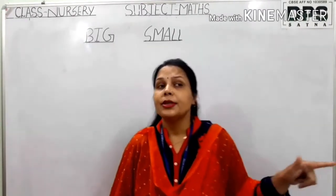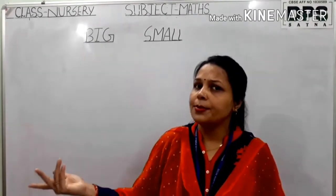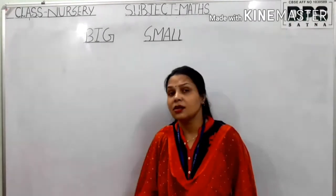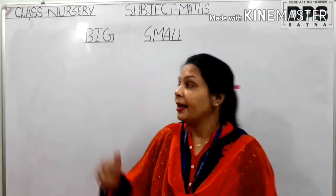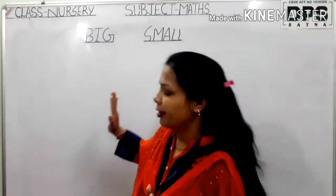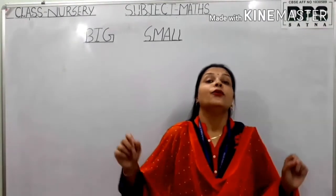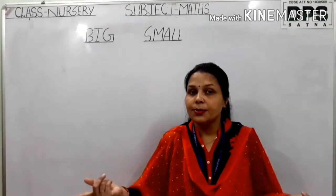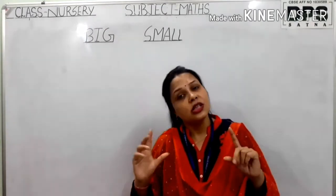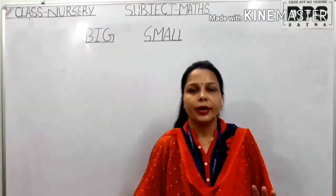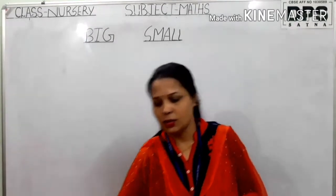Circle the big object and circle the small object — then you will do it. Ma'am, first of all, we will make it clear how to identify which object is big and which one is small. After that, we do the exercise.